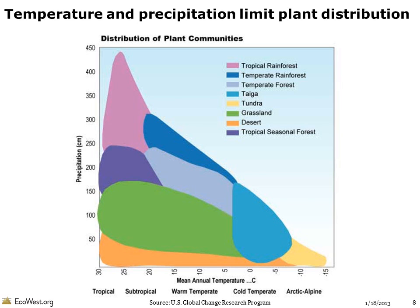Temperature and precipitation play critical roles in determining the distribution of plant communities around the globe. Plant distributions, in turn, determine which types of animals are found in various places. This graphic shows how climate zones compare for various types of plant communities. Because climate change is expected to affect both temperature and precipitation, major shifts in plant communities are projected in the West and elsewhere.